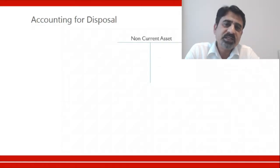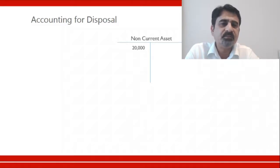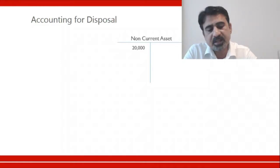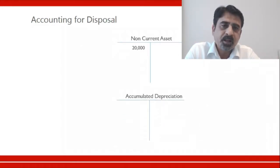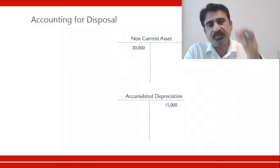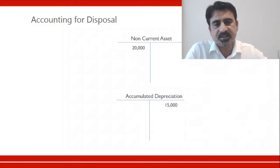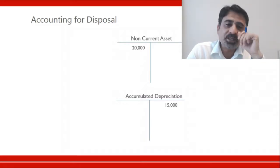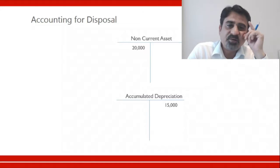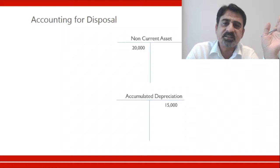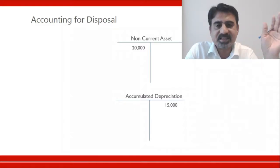Let's create an example. We have a non-current asset valued at 20,000. This is the same example used when explaining depreciation. We have accumulated depreciation of 15,000 — that's 5,000, 3,000, 3,000, 3,000, and 3,000 over five years. So we have an asset for 20,000 with accumulated depreciation of 15,000, and now we decide to dispose of it — to remove and sell this asset.